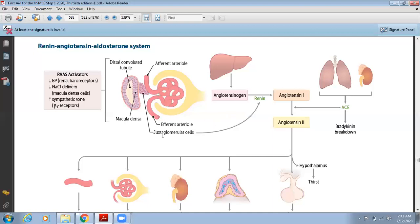Renin is released from the juxtaglomerular cells. When renin increases, it will convert angiotensinogen into angiotensin I. Angiotensinogen is present in the liver and it will be converted into angiotensin I by the help of renin.